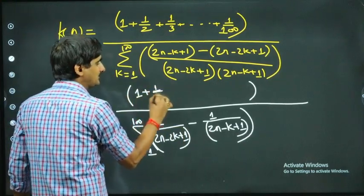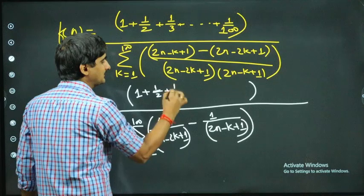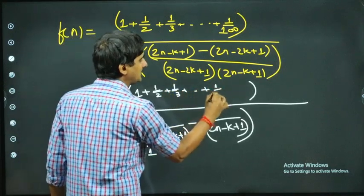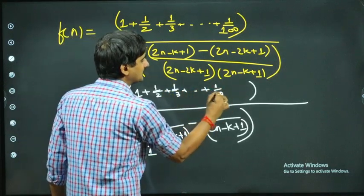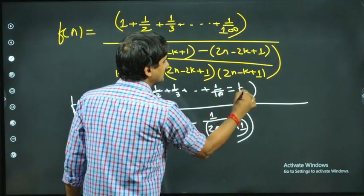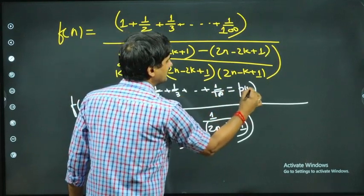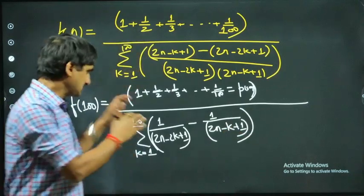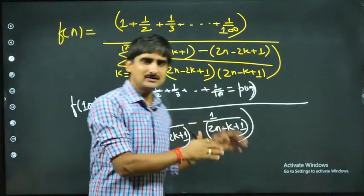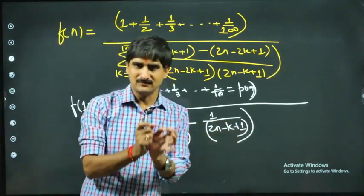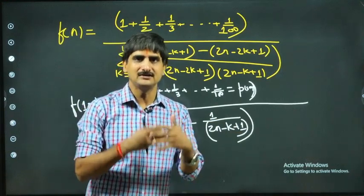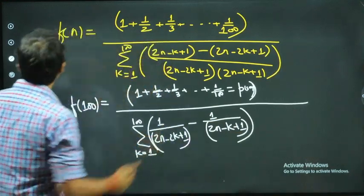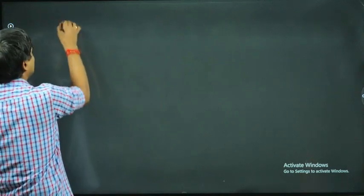Since 1 + 1/2 + 1/3 + ... + 1/100 appears in the numerator, let me assume its value is p. So I'm calling the numerator series equal to p, and we'll work in terms of p. Now let's open the denominator.